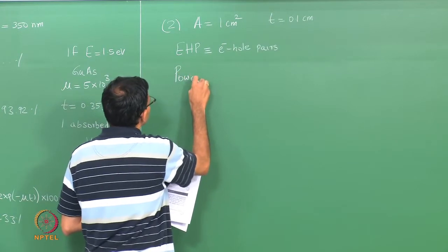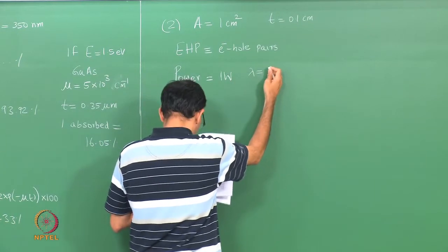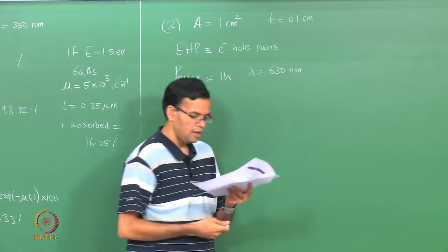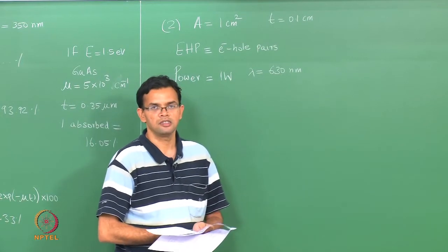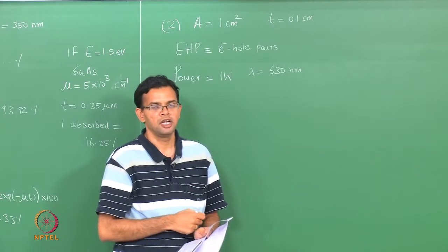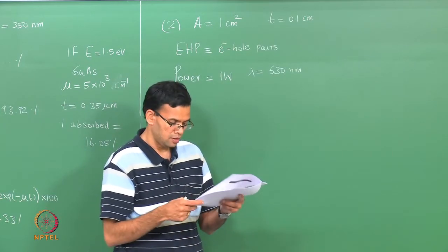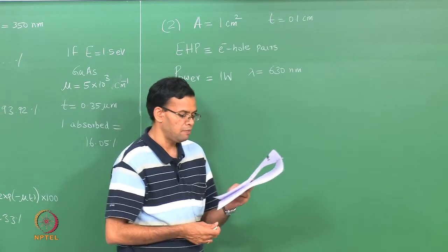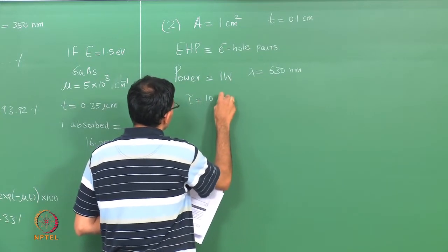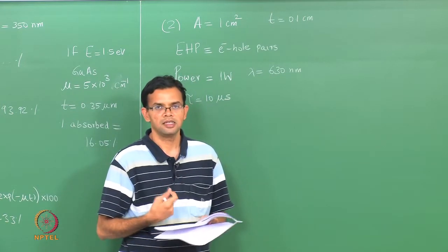The band gap of the semiconductor is not explicitly given, but we take it such that the light has sufficient energy to excite electrons across the band gap so that we can get electron-hole pairs. We are also asked to calculate the steady-state excess carrier concentration, given that the excess minority carrier lifetime is 10 microseconds.